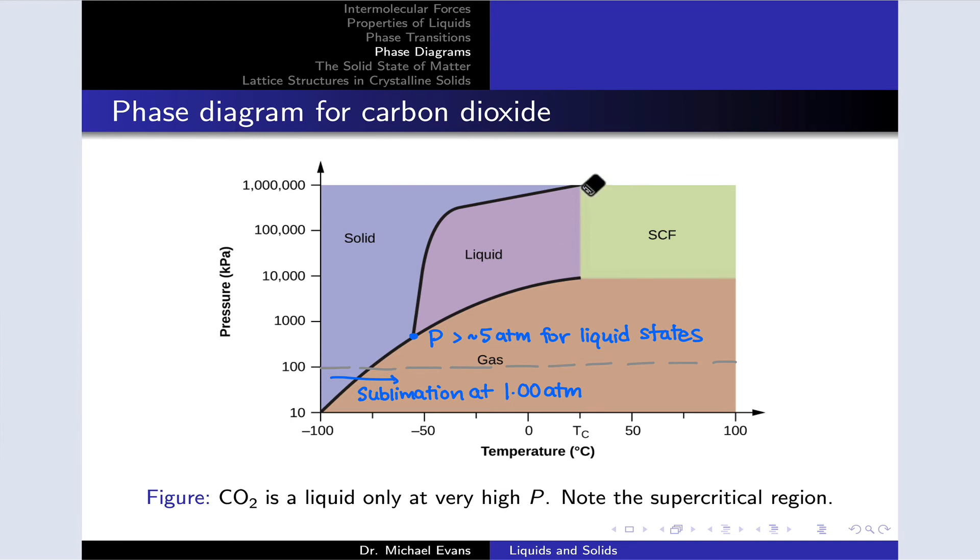Carbon dioxide has a relatively large supercritical fluid region that requires high pressure but only moderate temperatures. So supercritical carbon dioxide finds applications in industry, for example in decaffeinating caffeinated beverages. It's easy to generate because all we need is relatively high pressure, and we don't need the very high temperatures often required to get supercritical fluids for other substances.